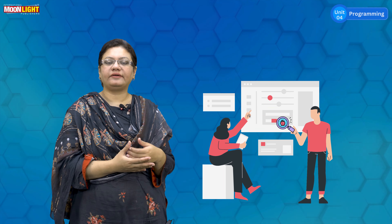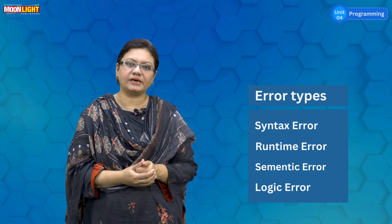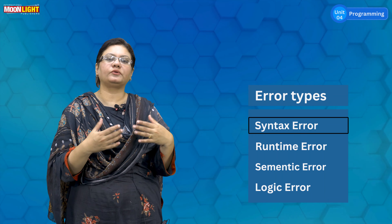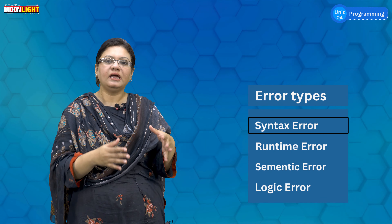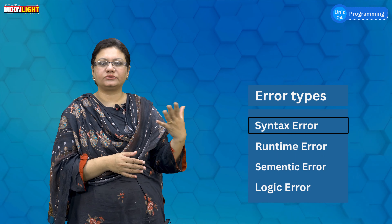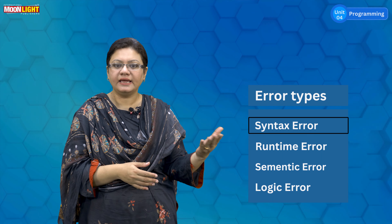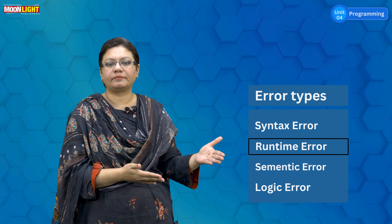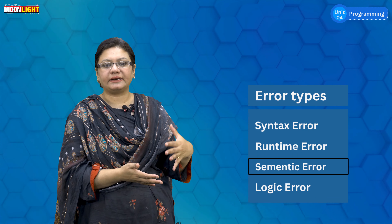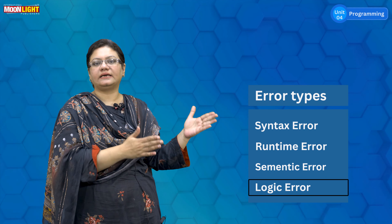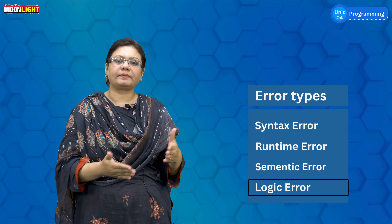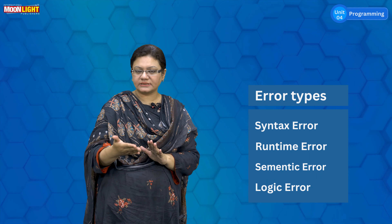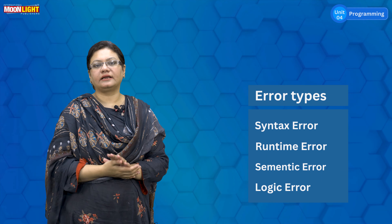There are four types of errors that can come in a computer program. First, there are syntax errors — if you have any grammatical mistakes in your code, those are syntax errors. Second is a runtime error — for example, if you divide by zero. Third is a logical error, and fourth is a systematic error. You will see the error in these four types and then remove it.